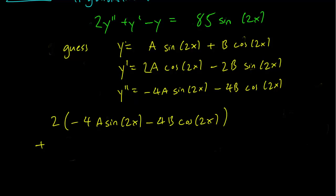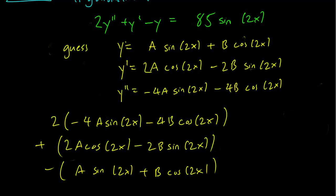I'm going to add the y prime term. And that's going to be 2A cosine 2x minus 2B sine 2x. The third term is just going to be minus, minus A sine 2x plus B cosine 2x. And all this is just going to be equal to 85 sine 2x.